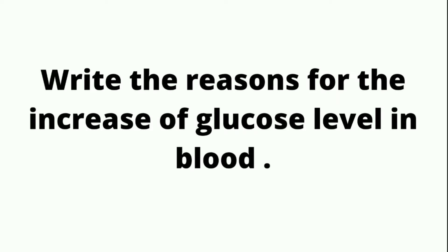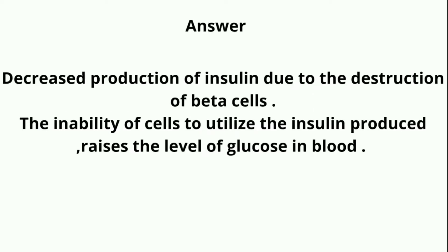First, Class 15 assignment answers. First question: Write the reasons for the increase of glucose level in blood. Answer: Decreased production of insulin due to the destruction of beta cells. The inability of cells to utilize the insulin produced raises the level of glucose in blood.